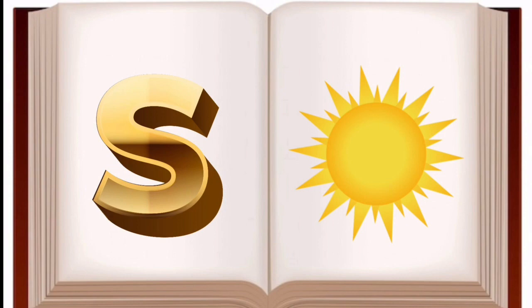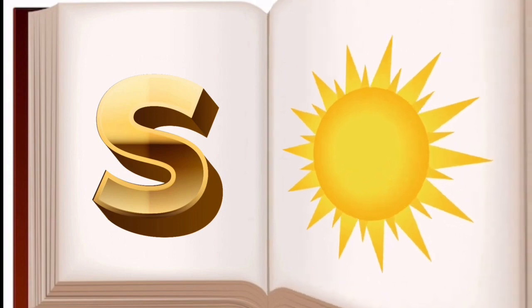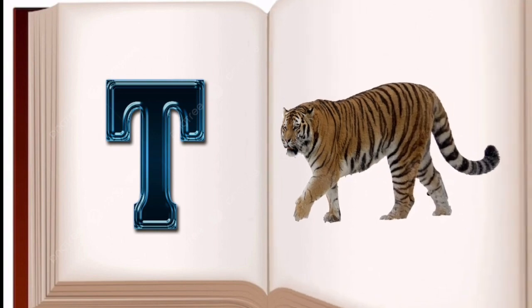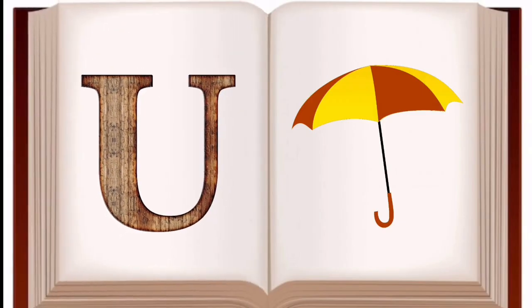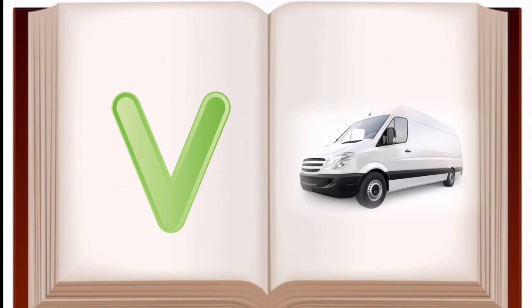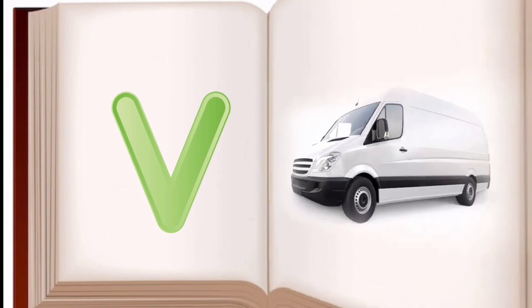S for sun, sun mane suraj. T for tiger, tiger mane cheetah. U for umbrella, umbrella mane chhata. V for van, van mane gadi.